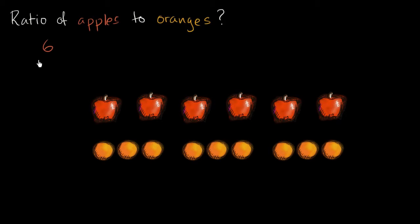And we could say the ratio is going to be six to, and then how many oranges do we have? One, two, three, four, five, six, seven, eight, nine. It is six to nine. Ratio of apples to oranges is six to nine.